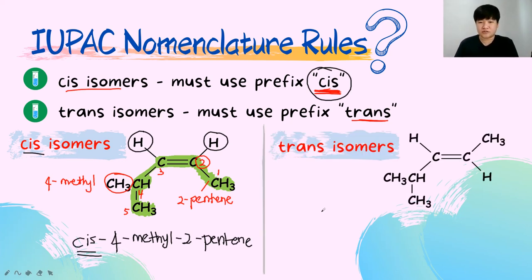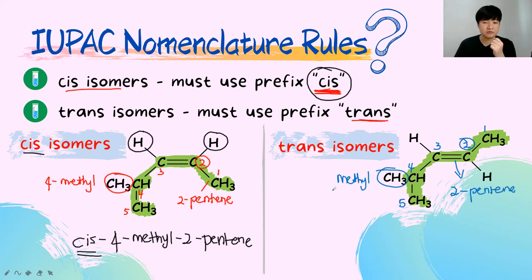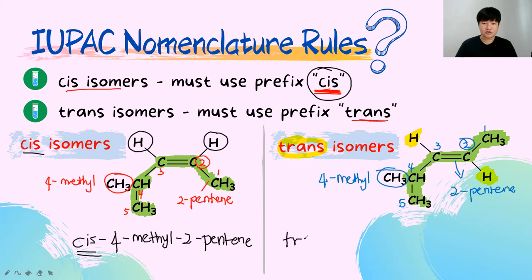For the trans-isomer of the same structure: the double bond is still at carbon 2, methyl group at carbon 4 — giving 4-methyl-2-pentene. But since the hydrogen atoms are at opposite directions, the prefix 'trans-' is added. The complete name is trans-4-methyl-2-pentene. The only difference between the cis and trans names is the prefix.